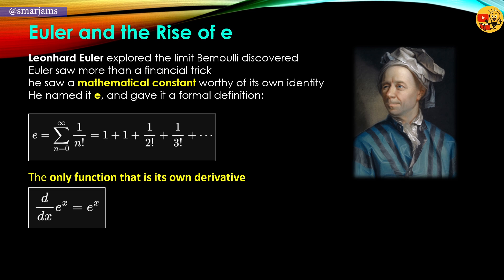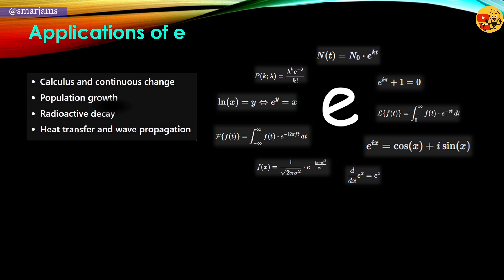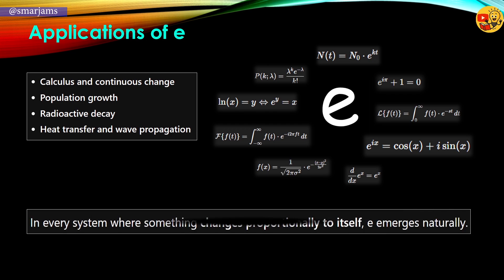Euler had elevated e from a curiosity into a fundamental constant of mathematics. From there, e left the world of banking and entered the world of science. It became central in modeling population growth, radioactive decay, the flow of heat, and even wave propagation. In every system where something changes in proportion to itself, e shows up, silently shaping reality.